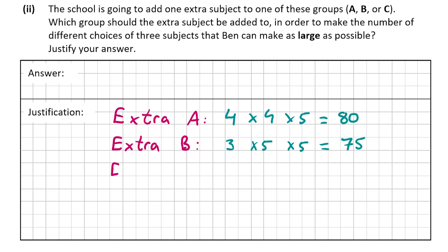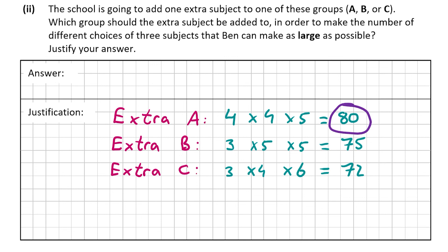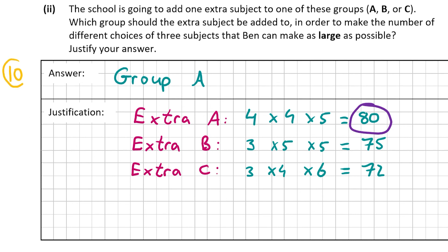If added to group C: A remains three, B remains four, C increases to six — three by four by six is 72. So comparing 80, 75, and 72, clearly 80 is the biggest number. Therefore, to make the number of different choices as large as possible, the extra subject should be added to group A. That answer is worth 10 marks. That's the answer for the final part of the question and the end of the video. Thank you very much for watching, and I hope I helped.